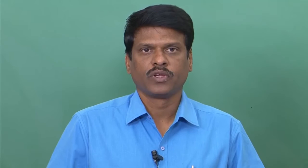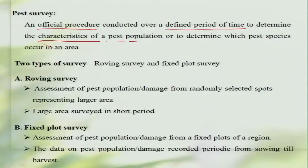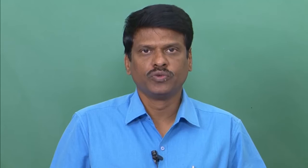This monitoring can be done through a process called pest survey. The pest survey is an official procedure conducted over a defined period of time in order to determine the characteristics of a pest population — when it is increasing, when it is decreasing — and to determine what pest species is occurring in an area. The survey can be done by two ways: a roving survey and a fixed plot survey.